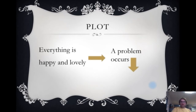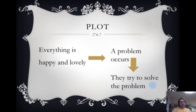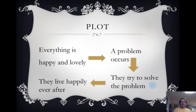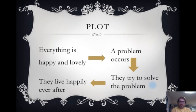Then a problem occurs — something dangerous might happen, or a bad character arrives. Something terrible might happen, or someone gets lost, like in Beauty and the Beast. They try to solve the problem, and at the end they live happily ever after. That is the basic plot of pretty much every fairy tale, although sometimes it's a little bit more complicated. This section — a problem occurs and they try to solve the problem — can become more complicated, but that is the basic plot.